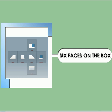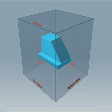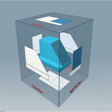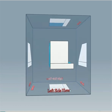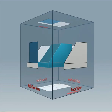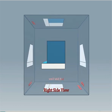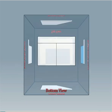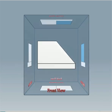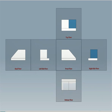We will see about how a solid is projected on the six faces of a box. A solid is placed in a transparent box and the six views of the solid are projected on the six faces of the box. The six views are arranged by a simple layout.